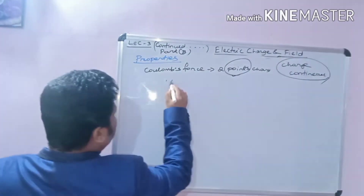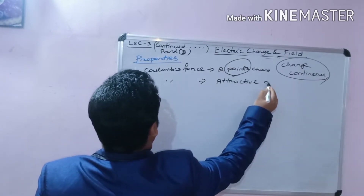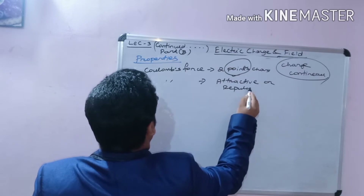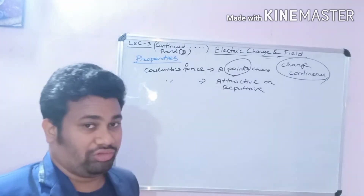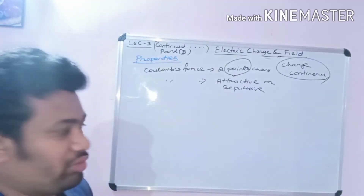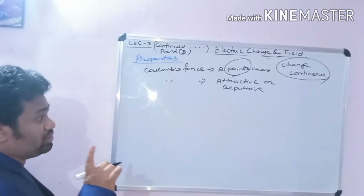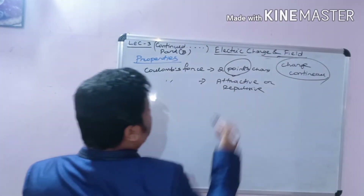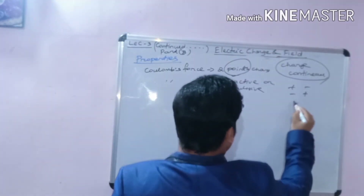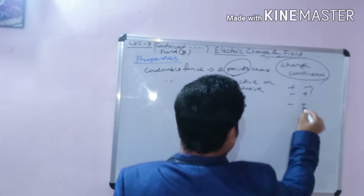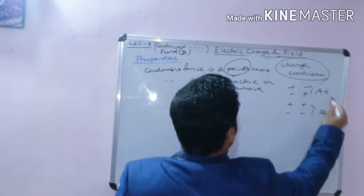Coulomb's force can be either attractive or repulsive. Whereas Newton's law of gravity, F equal to G M1 M2 by r squared, is only attractive. Coulomb's force is both attractive and repulsive: attractive for dissimilar (opposite) charges and repulsive for similar (like) charges.